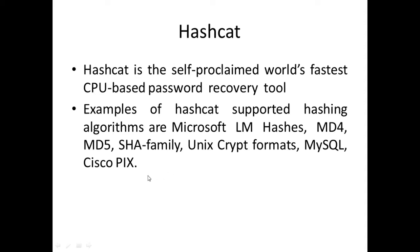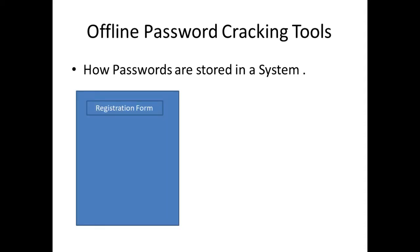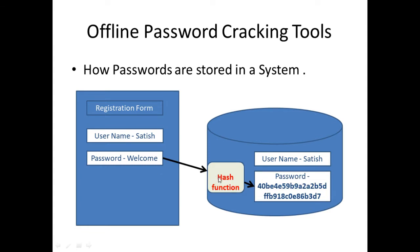Before going into the demo, let's take a short recap of what offline password cracking tools are, and for that we need to know how passwords are stored in a system. A user enters a name and password in a registration form — the username is stored in plain text in the database, while the password is sent through a hash function like MD5 or SHA and stored as a hash string. The length of the string depends on the hash function used — SHA-512 produces 512 bits, SHA-1 produces 160 bits.